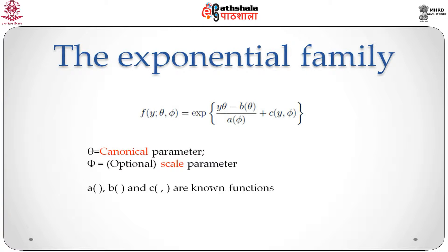Phi is a scale parameter and note that it is optional — it may or may not be present. For two very common examples such as the Poisson and the binomial, there is no additional scale parameter. The normal distribution is an example of an exponential family which does include a scale parameter. In this definition, the functions b, a, and c are all assumed to be known.